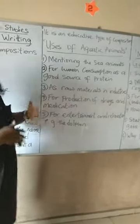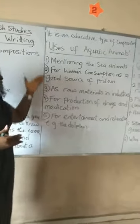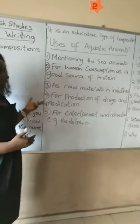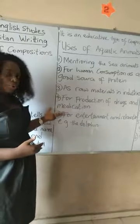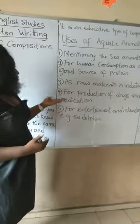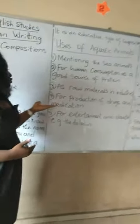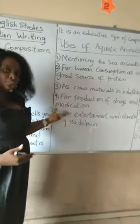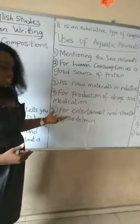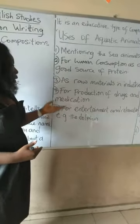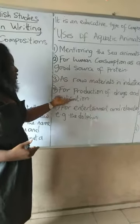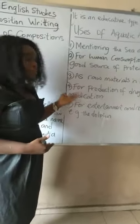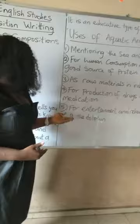As raw materials, how are aquatic animals raw materials? I would like you to tell me how. Then for production of drugs and medication — how is it done, and what animals are used for medication? Tell me.